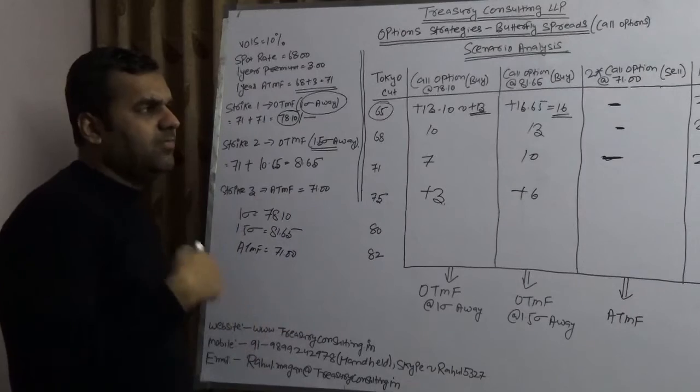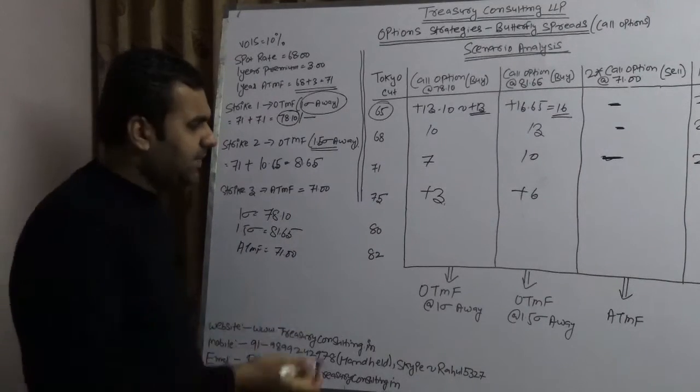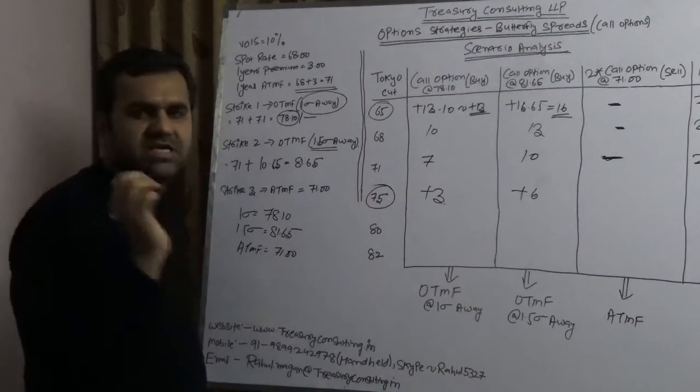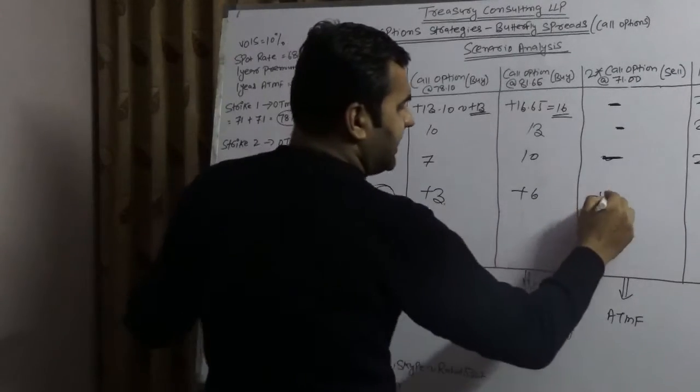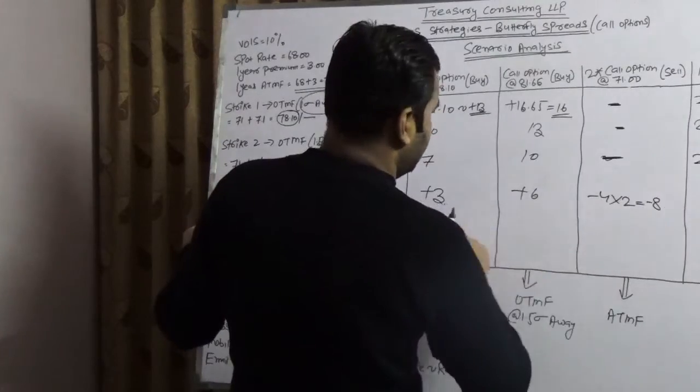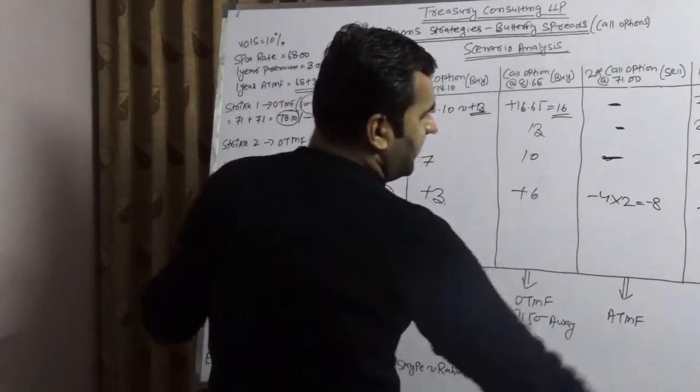Somebody has a right to buy from you at 71, market is at 75. You will surely exercise that. You would have a loss. That loss would be minus 4 into 2, which is minus 8. So net you would have a gain of plus 1.